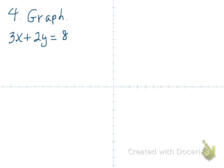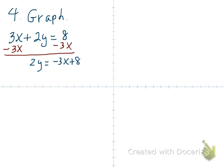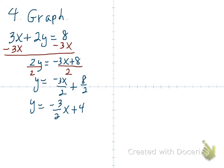Here you're asked to graph 3x plus 2y equals 8. This equation is also in standard form. You could find the intercepts, but it's probably a better idea to solve for y and put it in slope-intercept form. We subtract 3x from both sides, then divide both sides by 2. We get y equals negative 3 halves x plus 4.